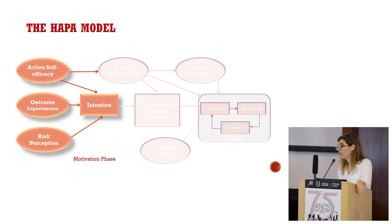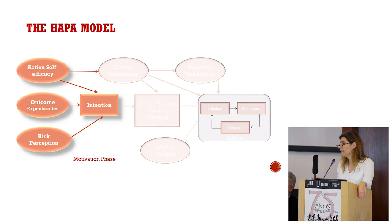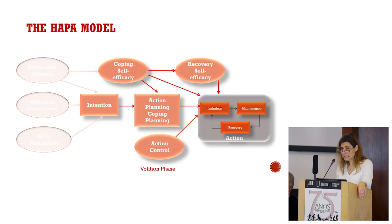The need to believe in one's ability to perform a novel or difficult desired action also contributes to intention. Then, intention has to be transformed into detailed instructions on how to perform the desired action, and the initiation and maintenance of an action is not achieved through a single act of will but involves self-regulatory skills and strategies. In this phase, the model emphasizes two main constructs: planning and self-efficacy.